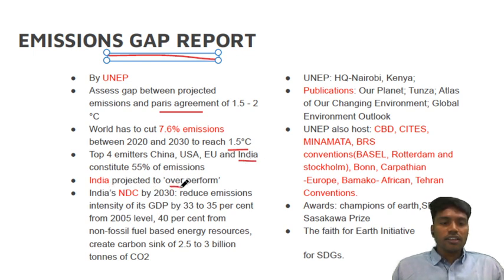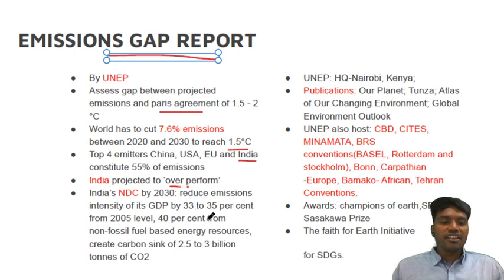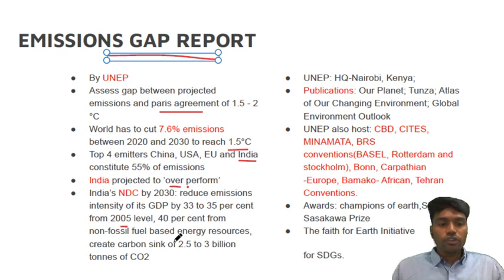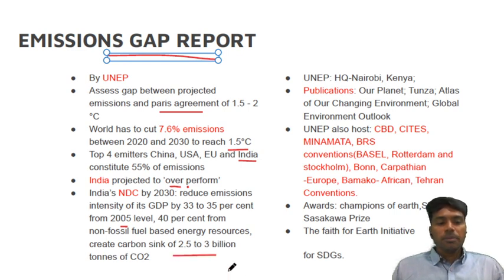However, India is said to be overperforming. India has its own NDC as per the Paris Agreement. We are saying we will reduce emission intensity according to our GDP by 30 to 35%, going to 2.5 level. Next, we will have 40% of energy production from non-fossil fuel sources. And third, we will be creating a carbon sink of 2.5 to 3 billion tons. The carbon sink here means we will be doing afforestation through green initiatives and so on.